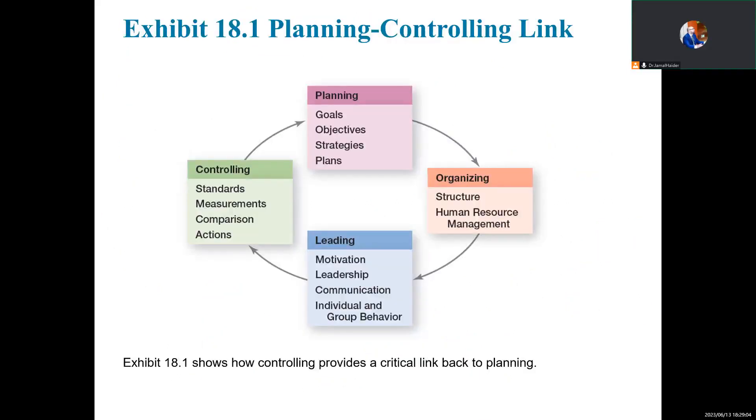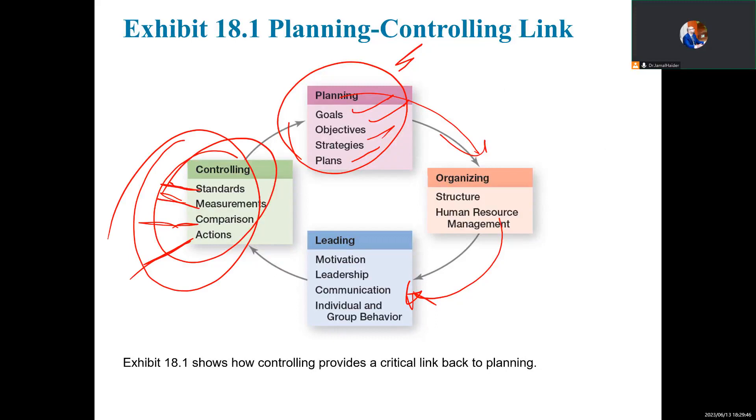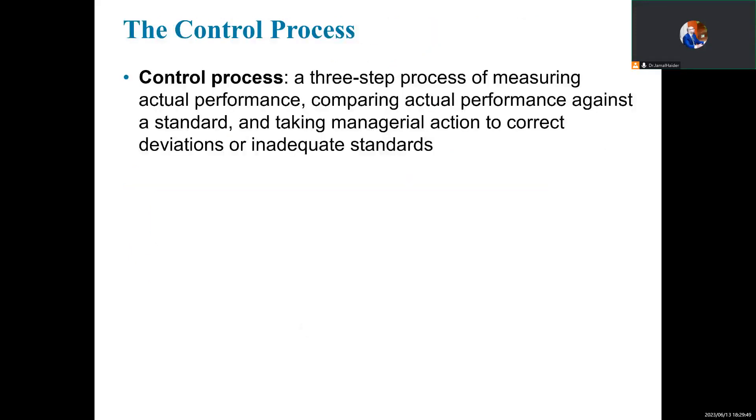So the planning-controlling link: all the management functions are interlinked. You are planning—what do we plan? Goals, objectives, strategies, plans. And then we organize how to achieve those, motivating employees so that they are on track. Controlling, so that you can see whether you are following the standards, your achievement of the goals is measurable, comparable. If not, what corrective actions should we take? So what I just discussed, this is called the control process.